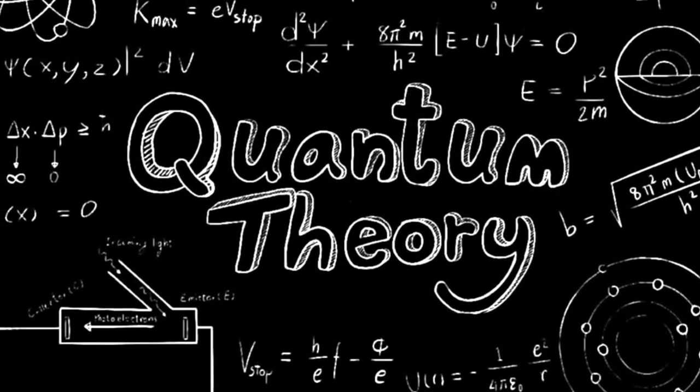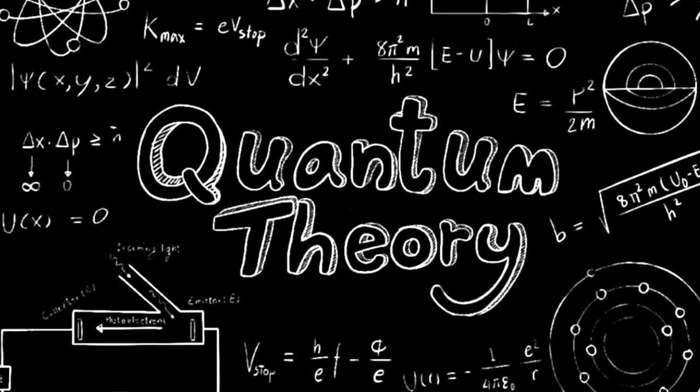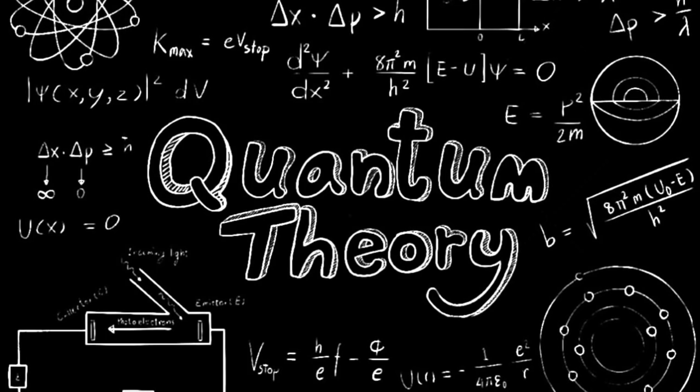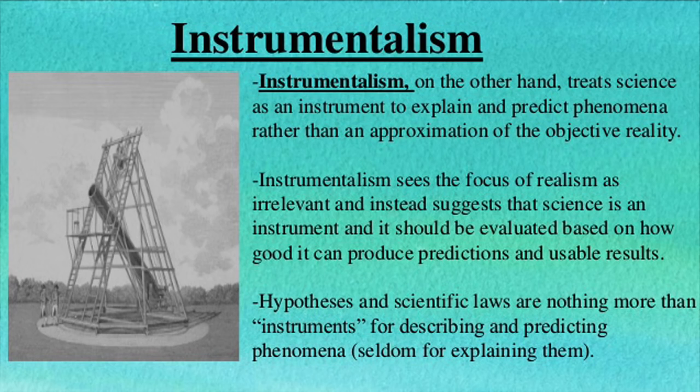However, accurate prediction is a sign of a theory's usefulness, not its truthfulness. The theory could be merely instrumental. But instrumentalism is not as satisfying as the conviction that one possesses the truth in capital letters.